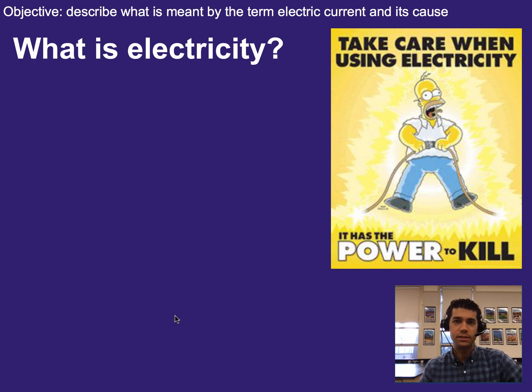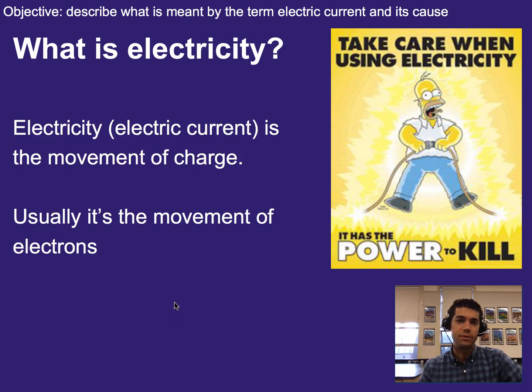Alright, so what is electricity? Well, when we're talking about electricity, we usually actually mean electric current, which is the flow or movement of charge. And it happens to usually be electrons, hence the word electricity. While you can make electric current out of some other charge carrier, it just tends to usually be electrons.